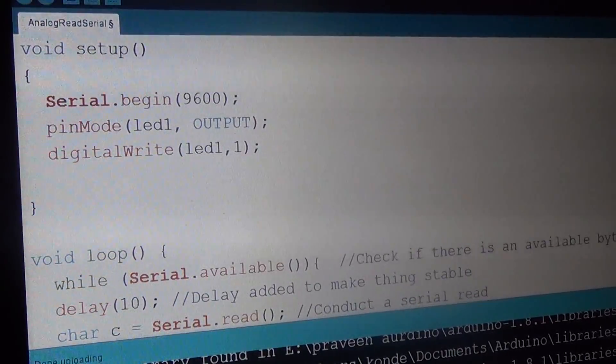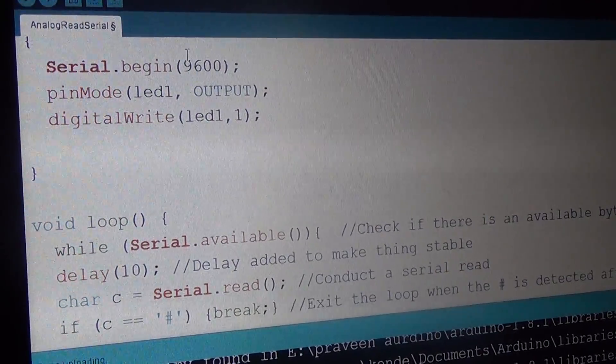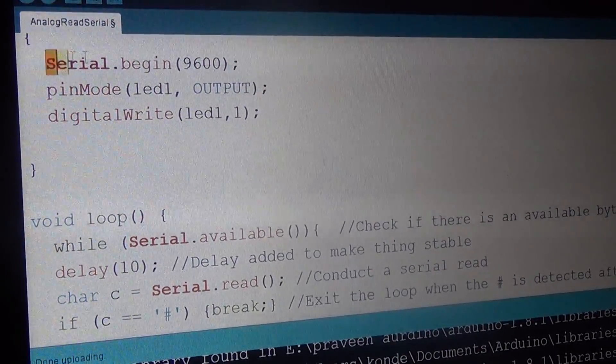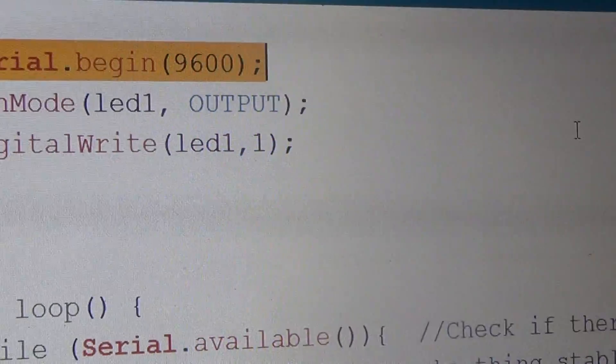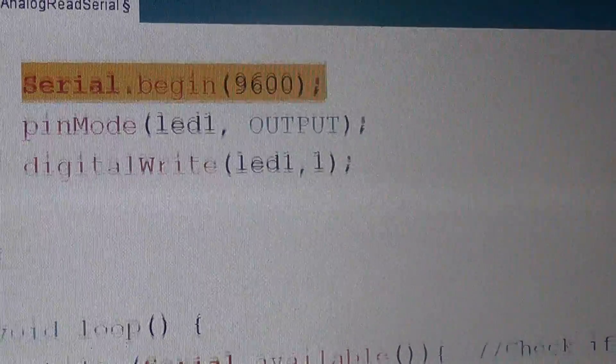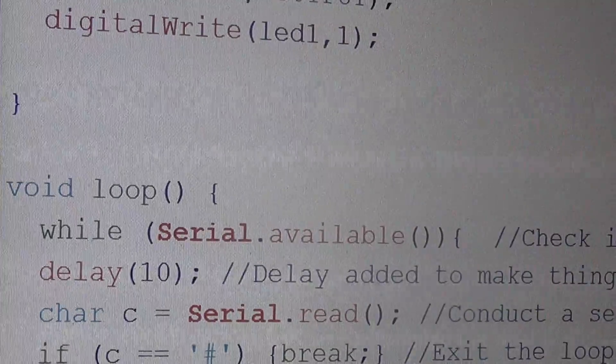Next, coming to the setup part, we are going to communicate with the Bluetooth using serial communication. Here serial communication has been initialized with 9600 baud rate and we are using relay as output device, so it is declared as output.